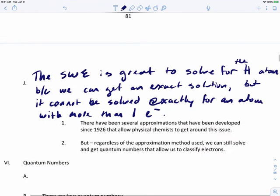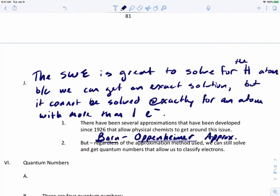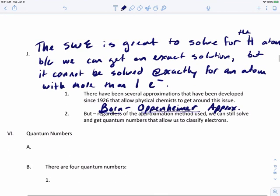Since the Schrödinger wave equation came out, there have been several approximations that have been developed. The first one that came out was called the Born-Oppenheimer approximation. Oppenheimer is a really famous name in American history. He's the scientific father of the atomic bomb. Born is also a really famous physicist. His granddaughter was Olivia Newton-John. If you've ever seen the movie Grease, she's a co-star. That's a throwback to her grandfather. Regardless of the approximation used, we can still solve and get quantum numbers that allow us to classify electrons.